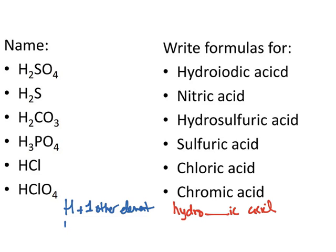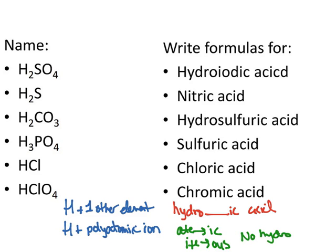Then you can also have H plus a polyatomic ion. So you might have H in nitrate, H in sulfate, H in phosphate. And then there is no hydro in front. You check the polyatomic ion. Ate turns into ic. Ite turns into ous. There's no hydro in front, and again, followed by the word acid.